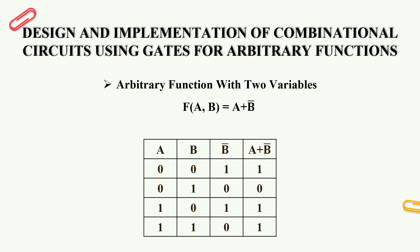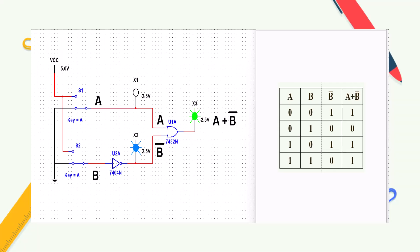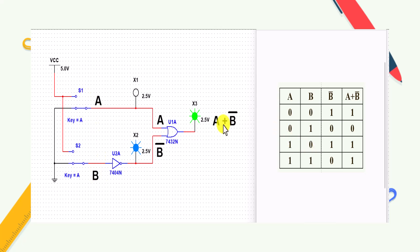Now we will design one circuit. First, we will design the two-variable arbitrary function. It will have 2 inputs A and B. So we will use switches S1 and S2 for A and B. The function is A + B̄.